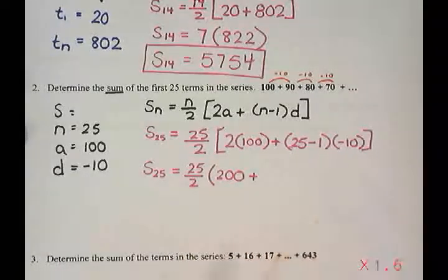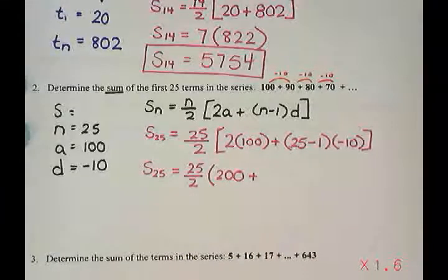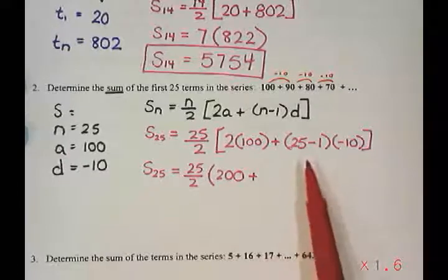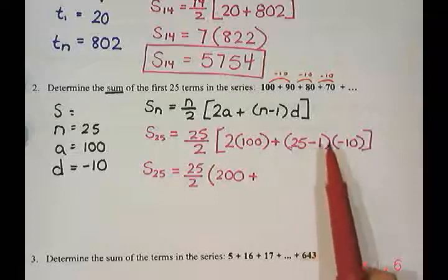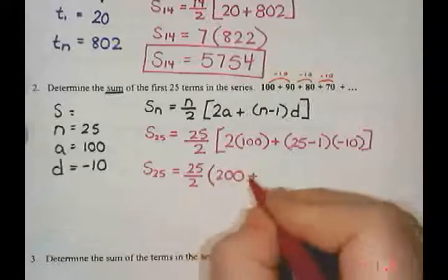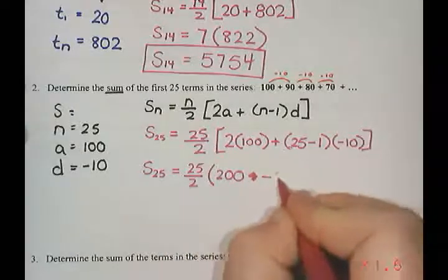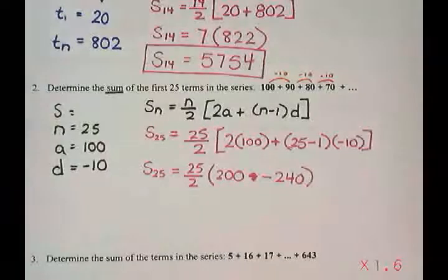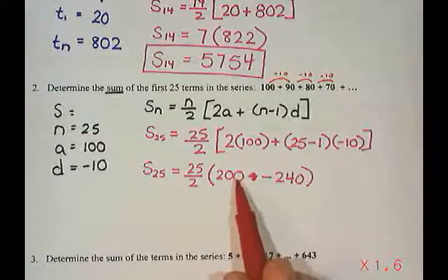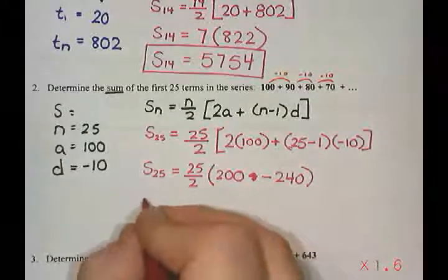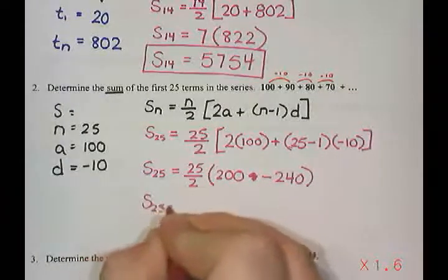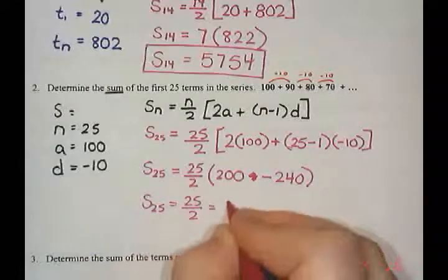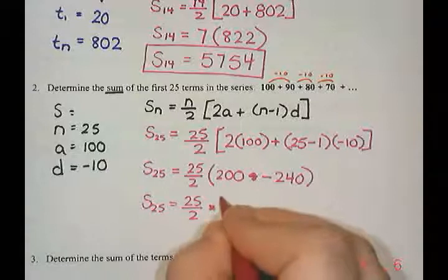25 minus 1 is 24. I could show a separate step where I do the 24. I'd rather just get that over with and multiply it here. So 24 times negative 10 is negative 240. So this is going to be subtract 240. Now, still need to finish the bracket. 200 take away 240 is negative 40.